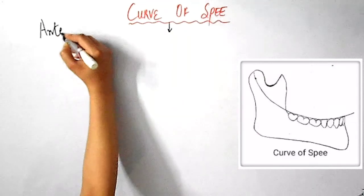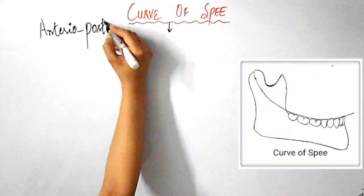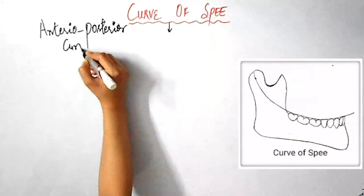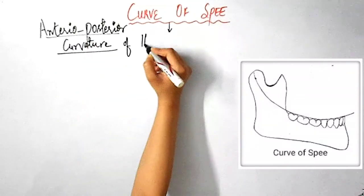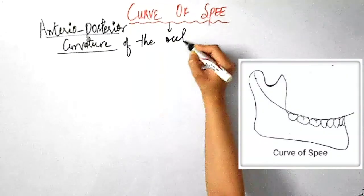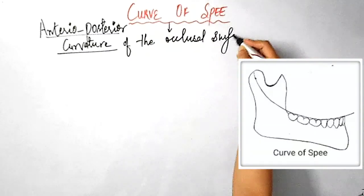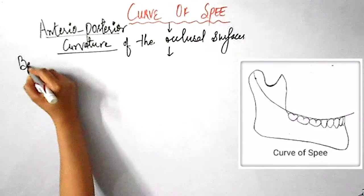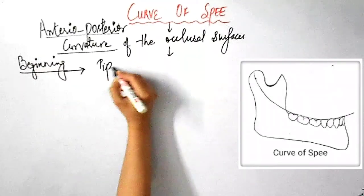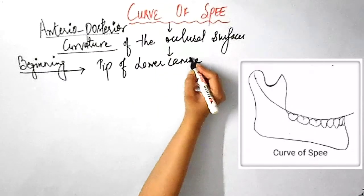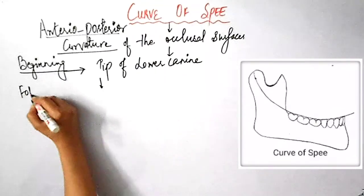Now, let me tell you what is a curve of Spee. So, it is the anterior posterior curvature of the occlusal surfaces. That means it is the curvature that goes from front to the back. As you can see in this picture, beginning at the tip of the lower canine, following the buccal tips of the bicuspids and the molars and continuing towards the anterior border of the ramus.